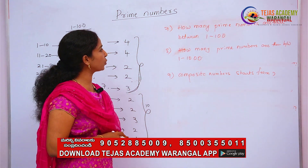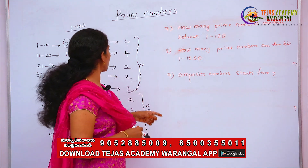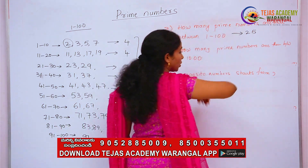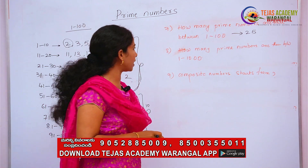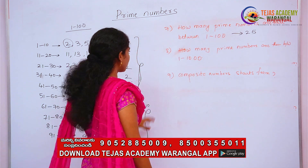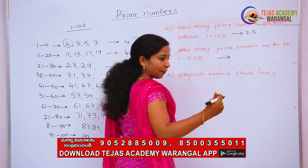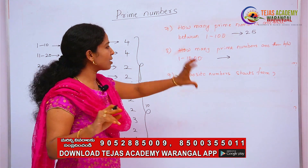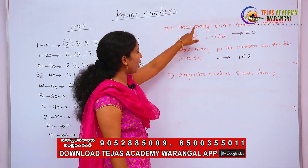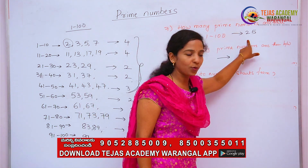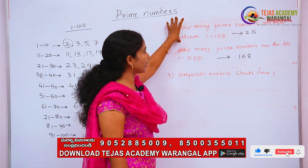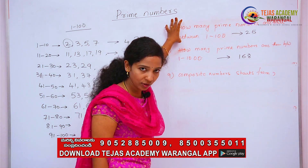How many prime numbers are there between 1 and 100? Twenty-five. How many prime numbers are there between 1 and 1000? You don't need to list them all — just remember the number 168. Between 1 and 100 there are 25 prime numbers; between 1 and 1000 there are 168 prime numbers. Between 1 and 50 there are 15 prime numbers.